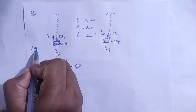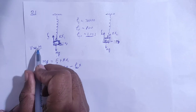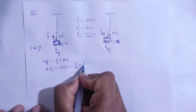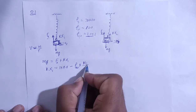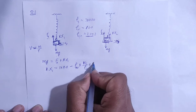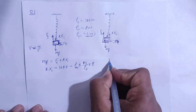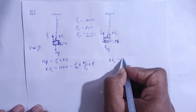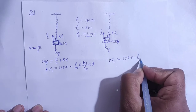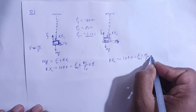Volume equals mass divided by density. For iron: volume = mass of iron divided by density of iron. So kx1 = 1 × 9.8 − (density of air × (mass of iron / density of iron) × g). Similarly, kx2 = 1 × 9.8 − (density of air × (mass of wood / density of wood) × g).